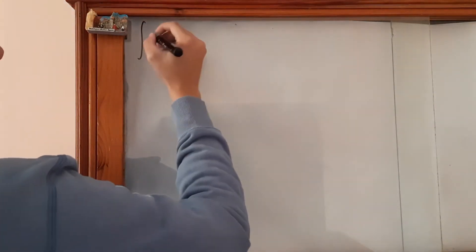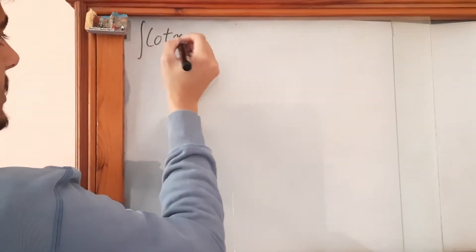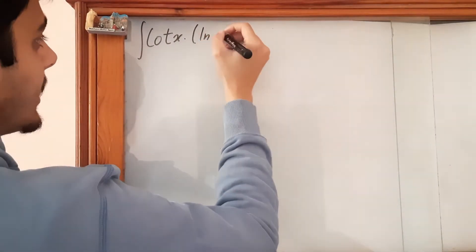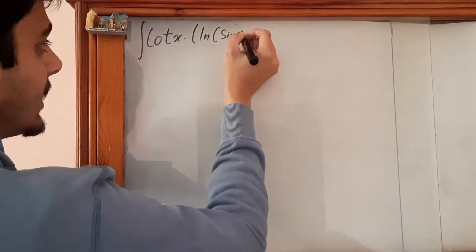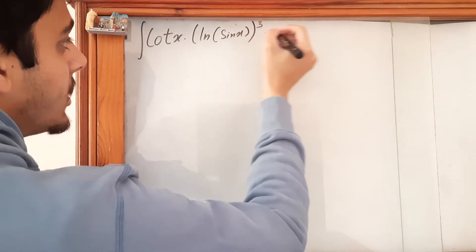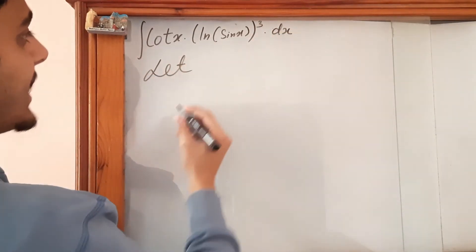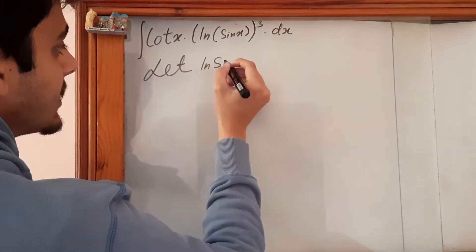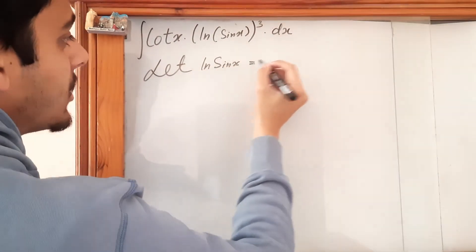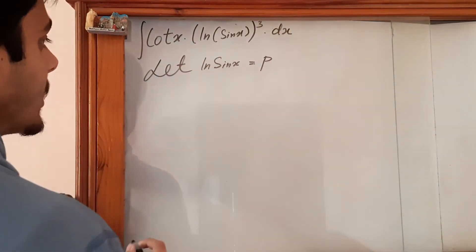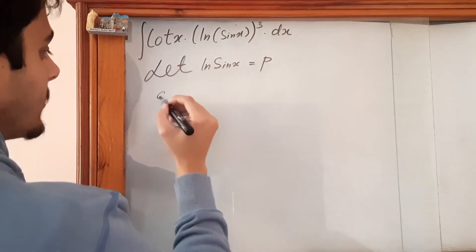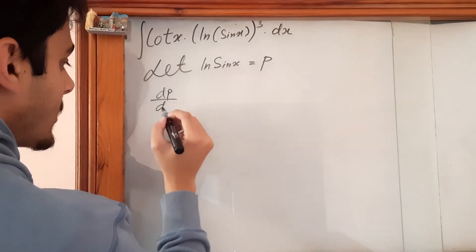So cot x times ln sin x whole cube dx. Let ln sin x equal p. Let's leave this power for now. So let's differentiate p with respect to x.